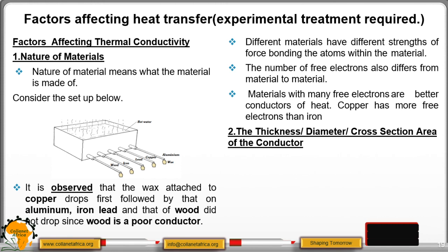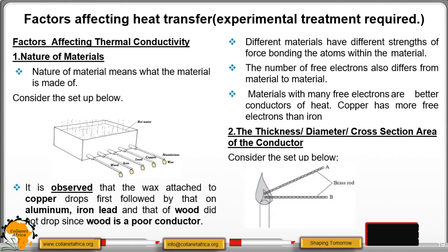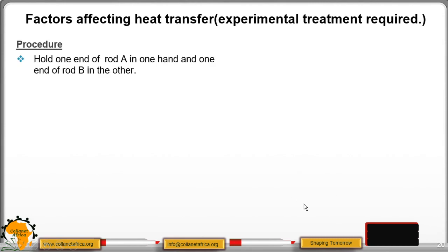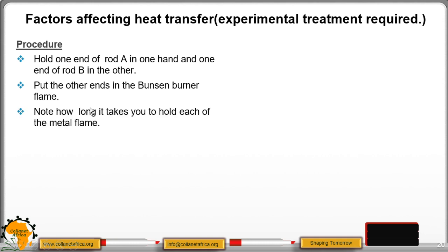Factor two is the thickness, diameter, or cross-sectional area of a conductor. We consider two brass rods of different thicknesses, A and B. Procedure: hold one end of rod A in one hand and one end of rod B in the other, then put the other ends in the Bunsen burner flame. Note how long it takes to hold each rod before it becomes too hot.